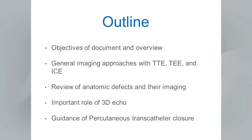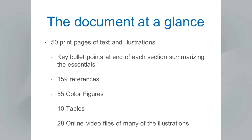That's a tall task to get through in an hour with Q&A. The outline includes a brief overview of the document and its objectives, general imaging approaches with each echo modality, a review of anatomic defects and their imaging, the role of three-dimensional echo, and guidance of percutaneous transcatheter closure. This is real reference material — I encourage you to go back and use it as a resource.